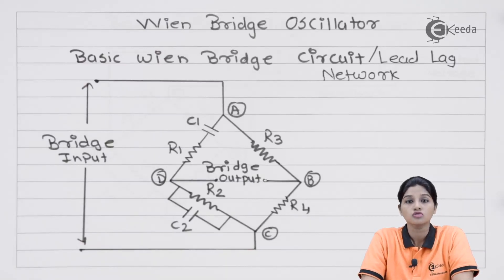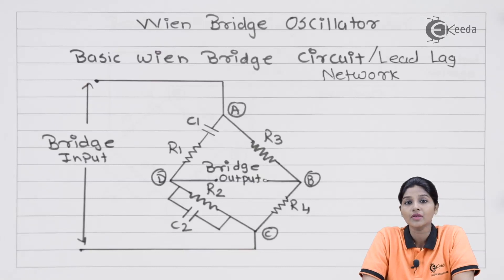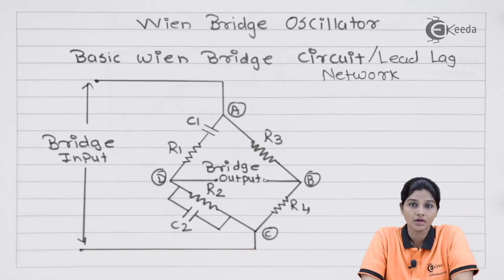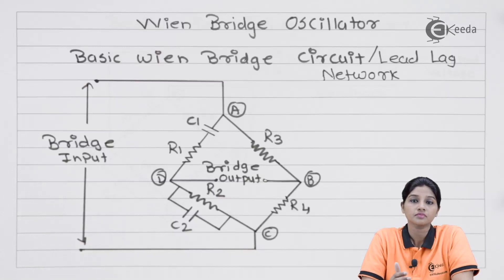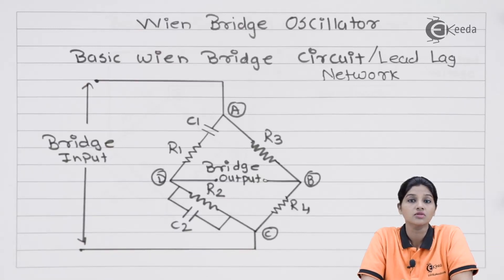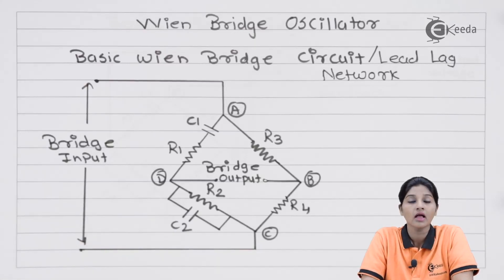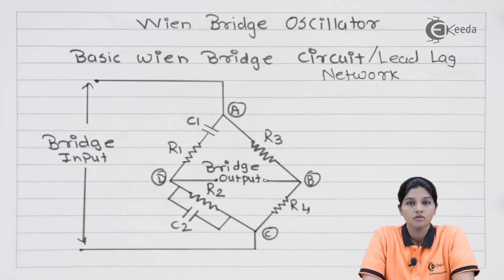So, for any circuit to work as an oscillator, the amplifier is required to satisfy certain criteria, and that is called Barkhausen's criteria. According to Barkhausen's criteria, the first condition is that the phase shift around the loop equals 0 degrees, 360 degrees, or an integral multiple of 360 degrees. The second condition is that the magnitude of A·β equals 1, where |Aβ| is the loop gain.